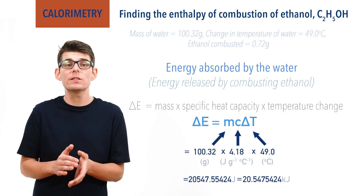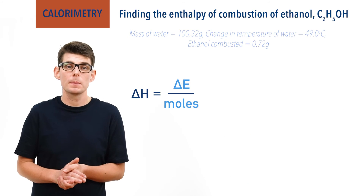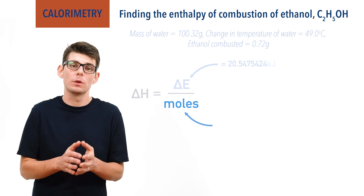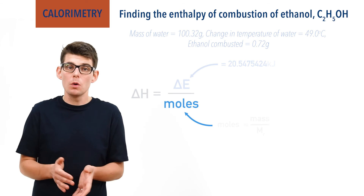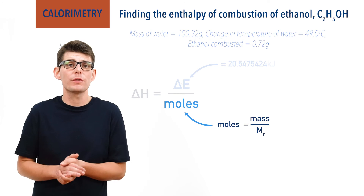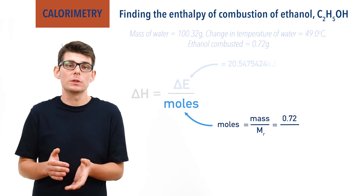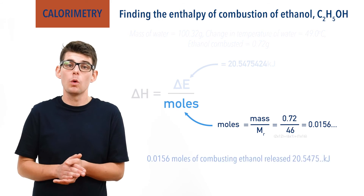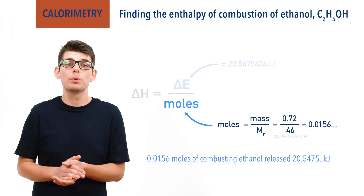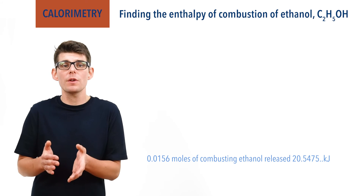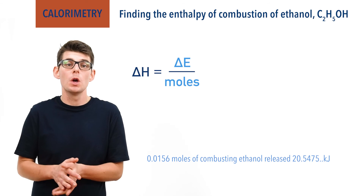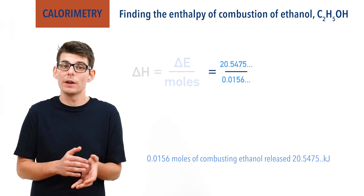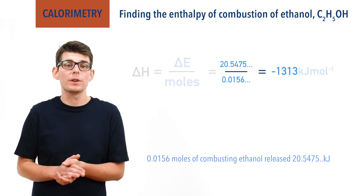To find enthalpy change, we need to know the energy change per mole of ethanol that was combusted. We know that 20.5475 kilojoules of energy was released, but we don't know how many moles of ethanol combusted to release that amount. Moles equals mass divided by Mr. The mass of ethanol that reacted was 0.72 grams and the Mr of ethanol is 46, giving 0.0156 moles. This means 0.0156 moles of ethanol were combusted and released 20.5475 kilojoules of energy. To convert to kilojoules per mole, we divide 20.5475 by 0.0156, giving an enthalpy change of minus 1,313 kilojoules per mole.